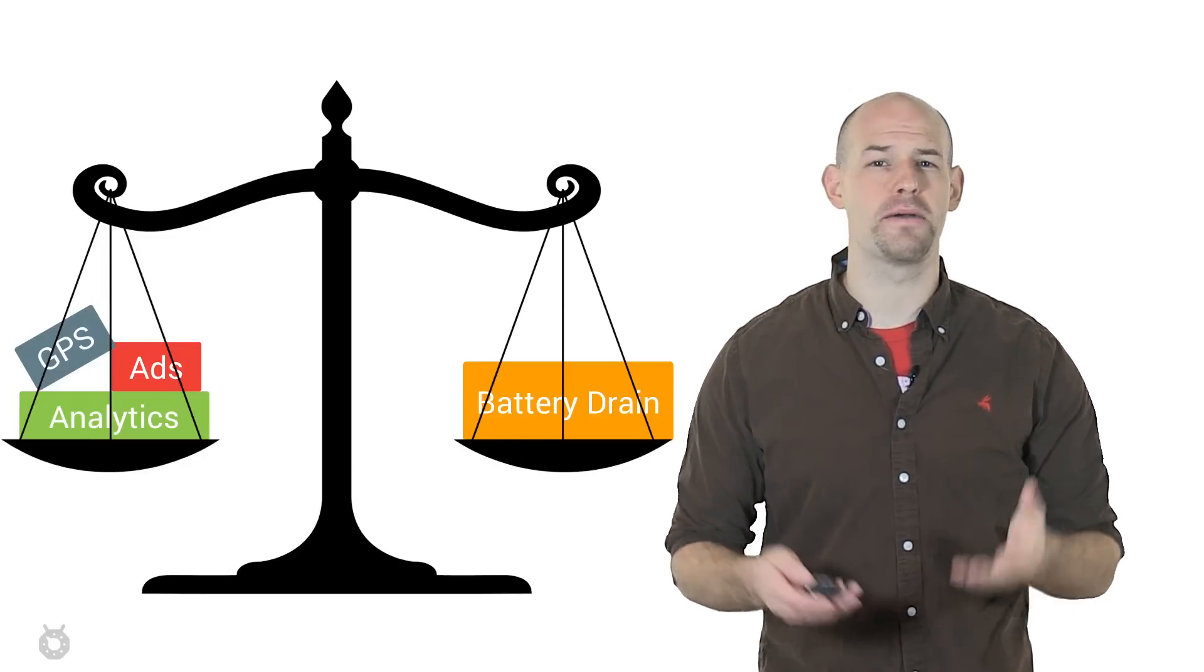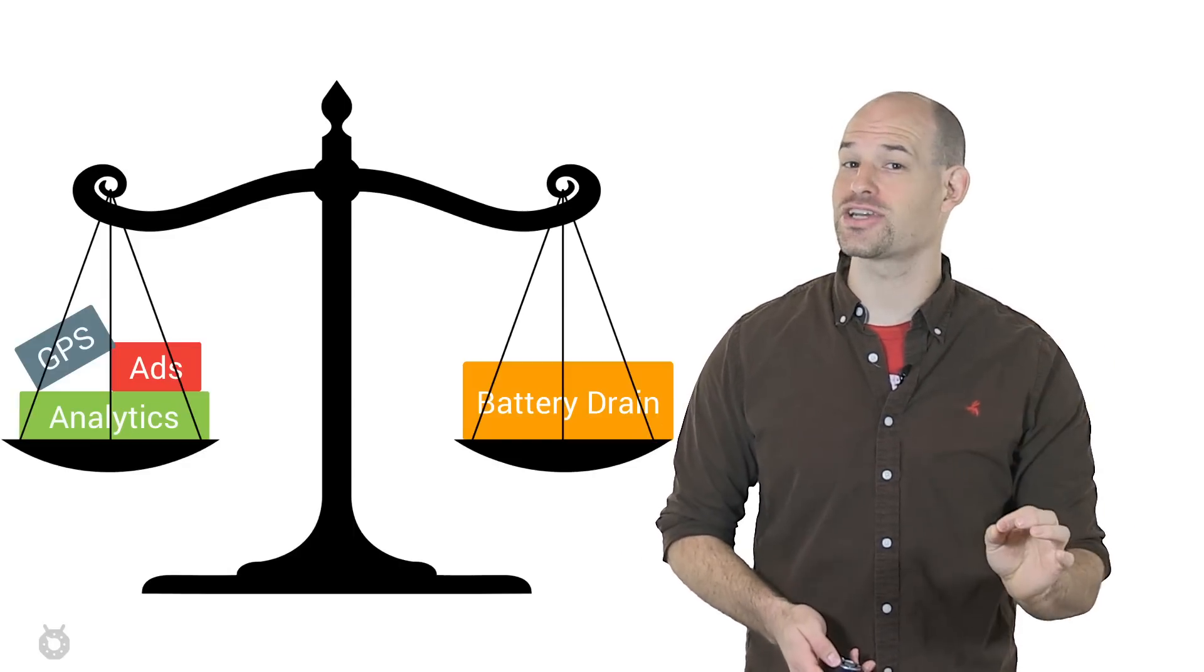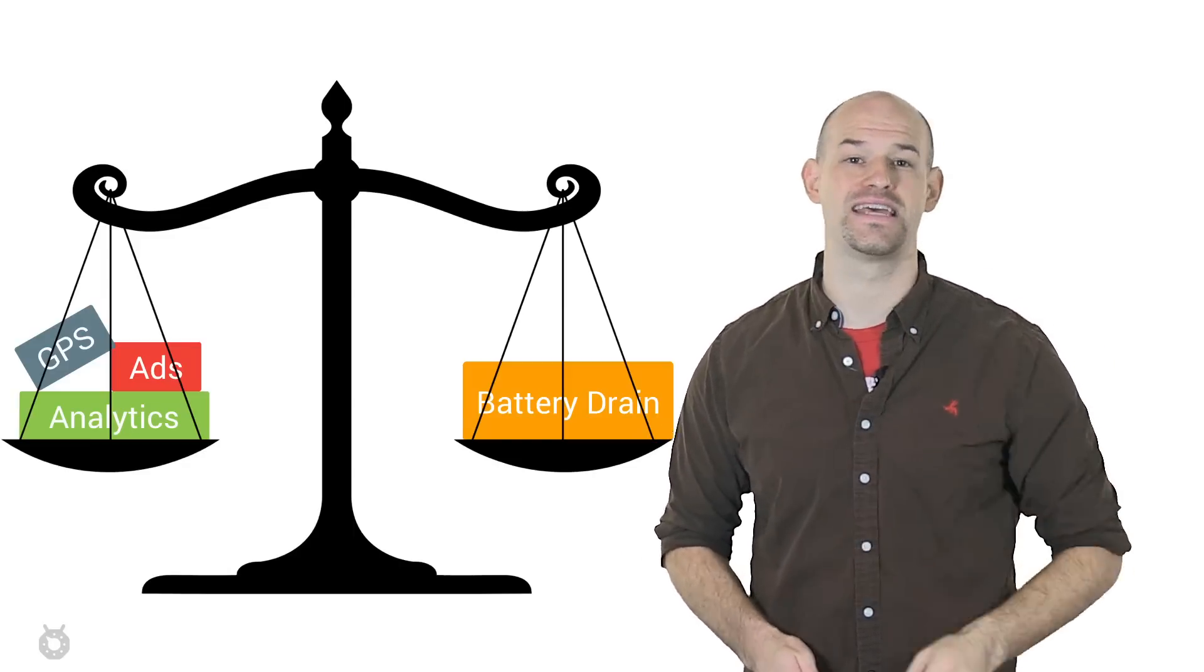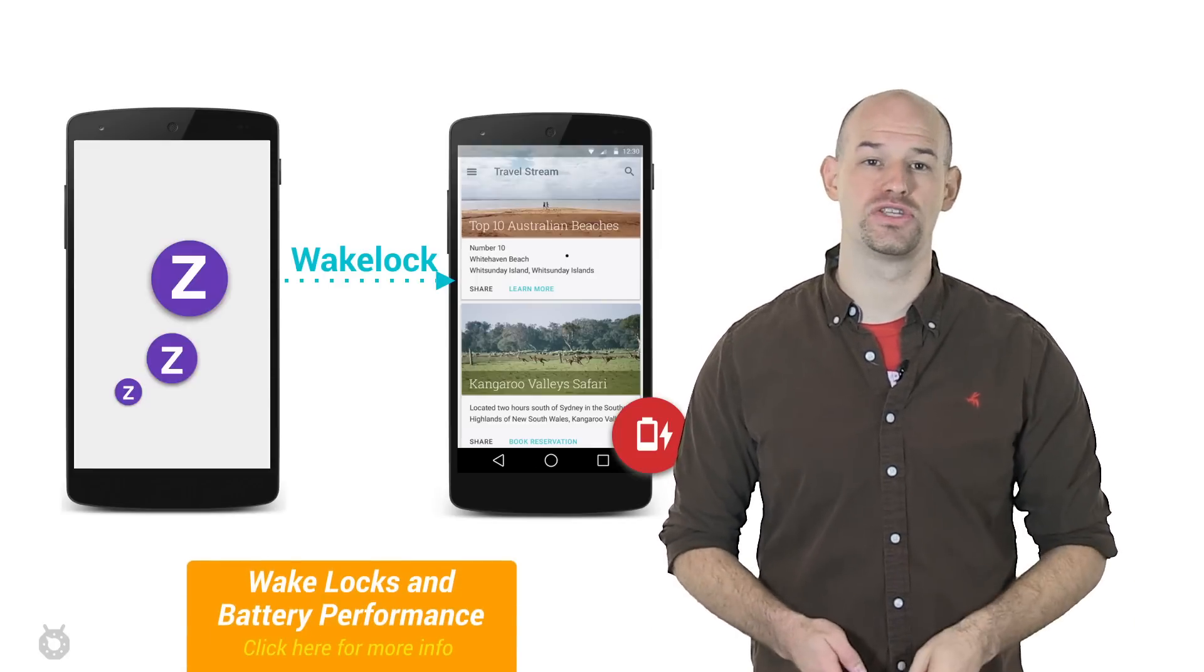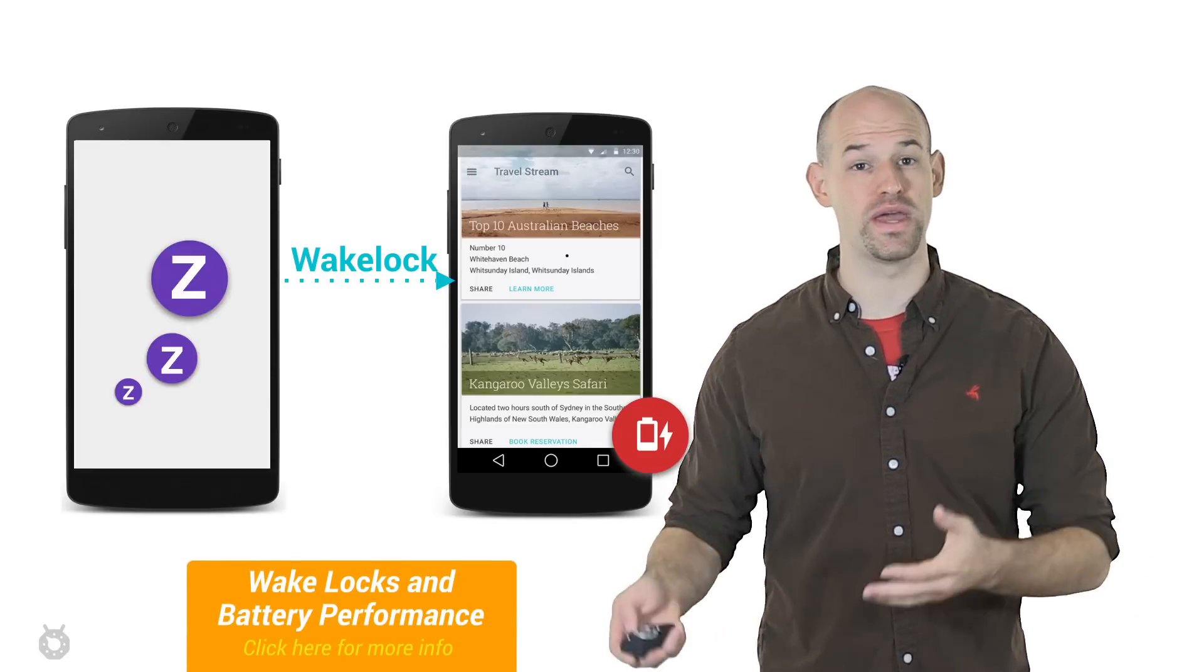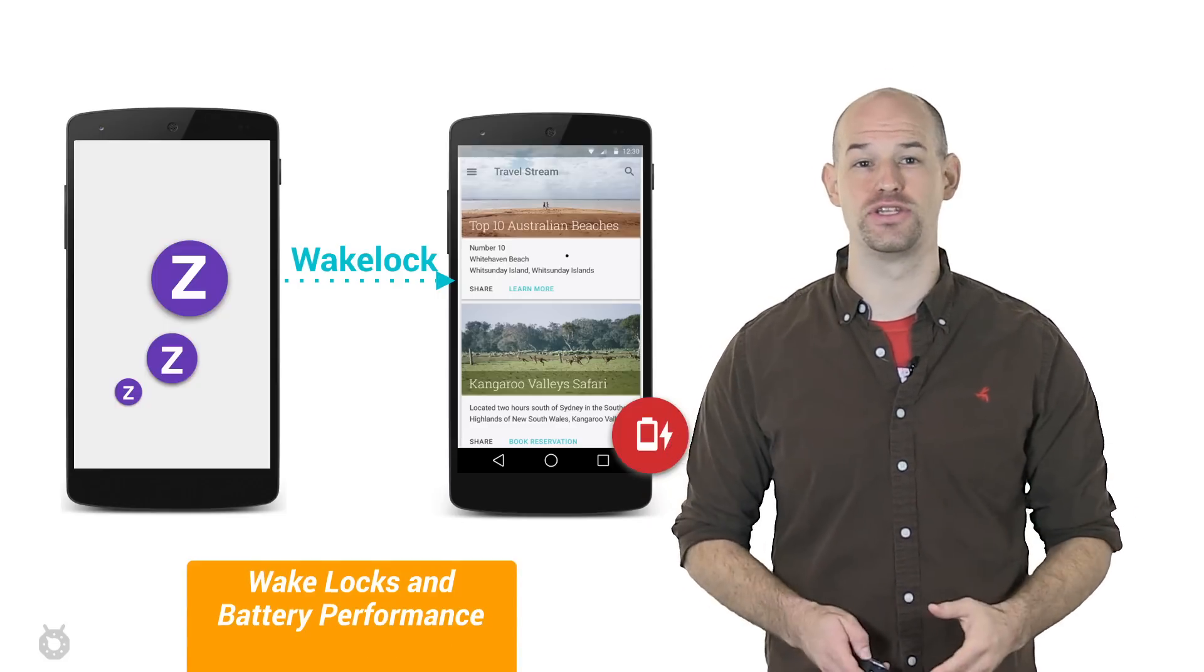Smart developers will focus on finding a balance between these two extremes by recognizing that they can perform the same actions and draw less battery at the same time. For example, waking up the device from sleep has a battery cost associated with it, so conservative use of wake locks, or rather smarter use of wake locks, can help reduce battery drain.